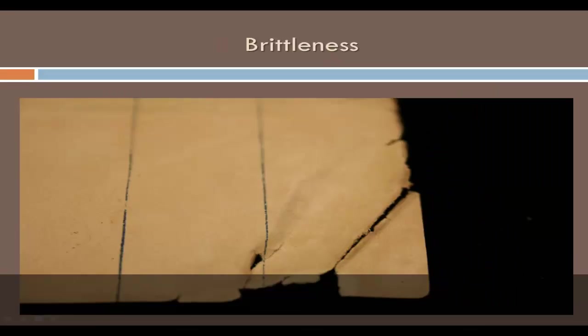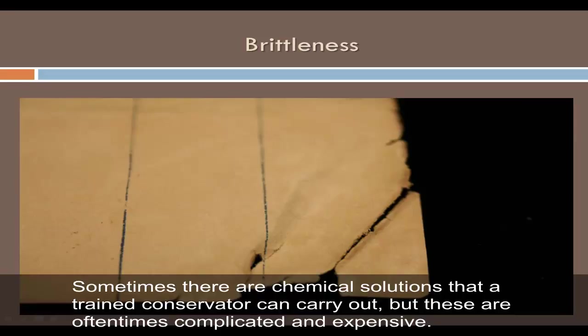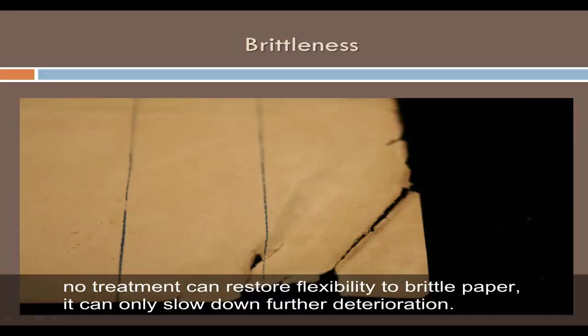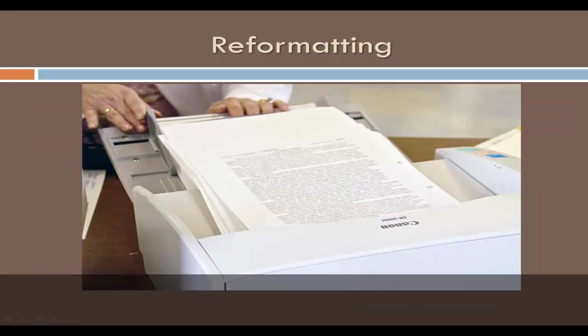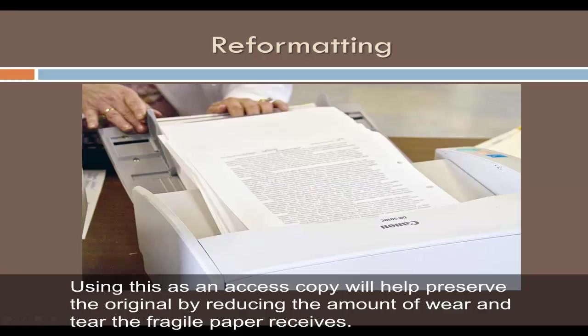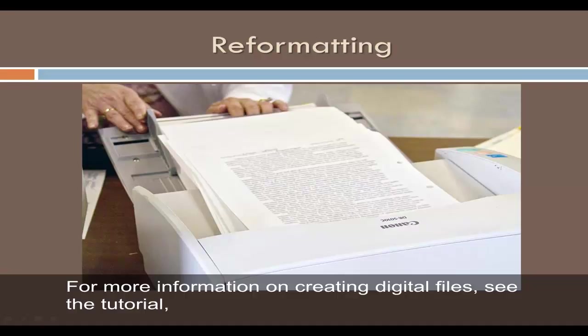Unfortunately, not a lot can be done to combat inherent vice in materials. Sometimes there are chemical solutions that a trained conservator can carry out, but these are often complicated and expensive. And sometimes paper is just too brittle — no treatment can restore flexibility to brittle paper; it can only slow down further deterioration. One solution would be to reformat the object by making a scan of the document. Using this as an access copy will help preserve the original by reducing wear and tear on the fragile paper. However, sometimes reformatting is exchanging one problem for another, as now you have two objects to care for. For more information on creating digital files, see the tutorial Managing and Preserving Digital Images.